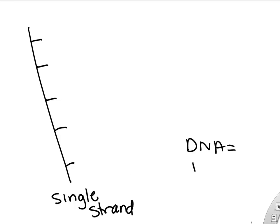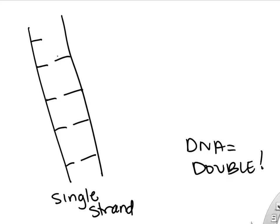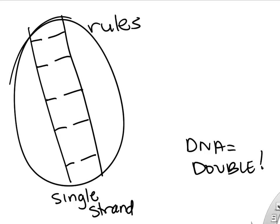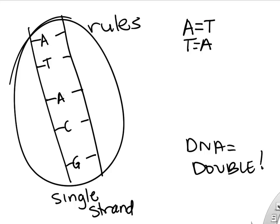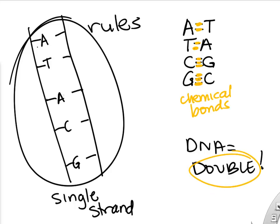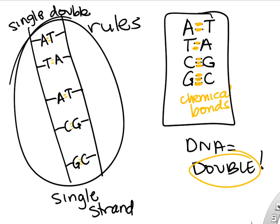What we've been doing so far is making a single-stranded DNA, but DNA usually is found double-stranded. There are certain rules for making double-stranded DNA. If we have one side — A, T, A, C, G — we have to follow some rules when we make the other side. A's always bind to T's, T's always bind to A's, C's bind to G's, and G's bind to C's. This is because of the chemical bonding and structure of the nitrogenous bases. So we put a T, an A, a T, a G, and a C — and we went from single-stranded to double-stranded DNA.